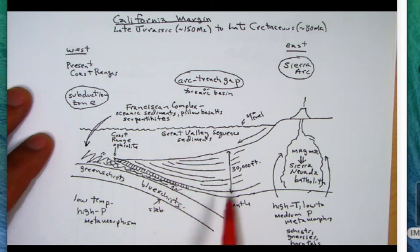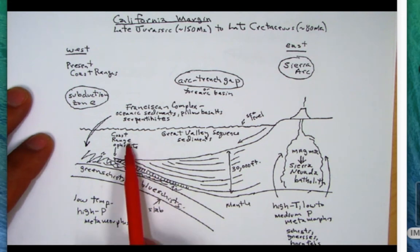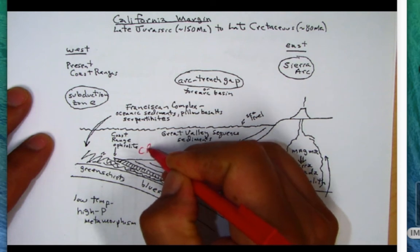I want you to note that under the Central Valley, California is kind of unusual in that the Central Valley is underlain by a fragment of oceanic lithosphere, and we call that the Coast Range Ophiolite, sometimes abbreviated as CRO.